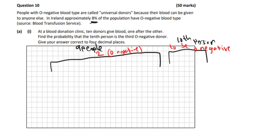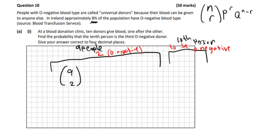So we must use the Bernoulli trial formula for this. So in order to get the probability of 2 out of the 9, you must use this formula. So it's N choose R, then it's the positive outcome to the power of R, and the negative outcome to the power of N minus R. So there are 9 people and we want 2 of them to be O-, so we're using this for the first 9.